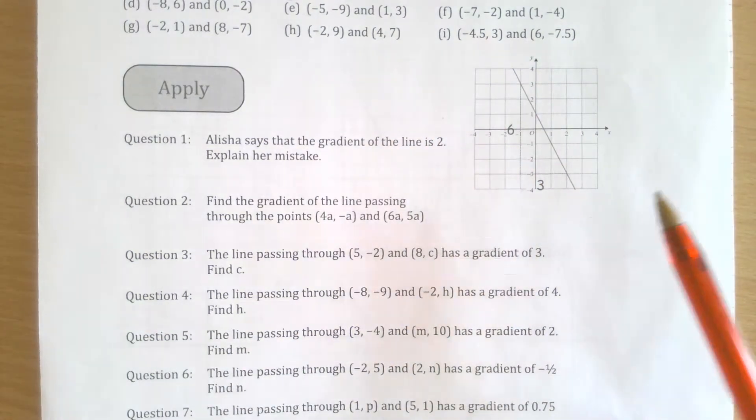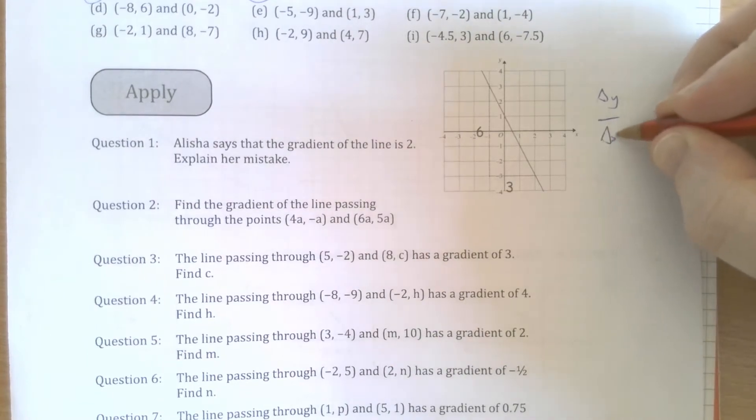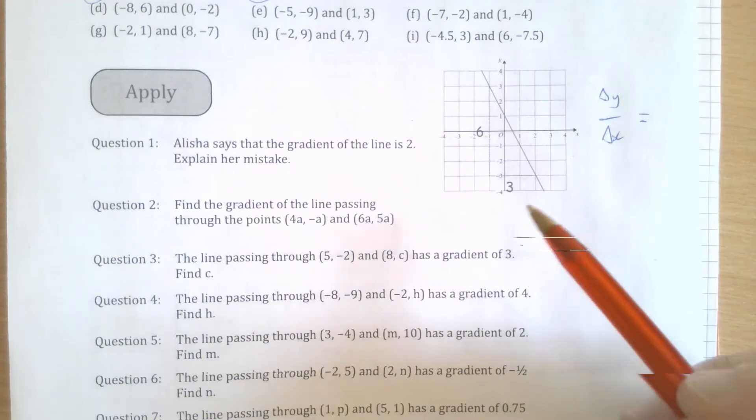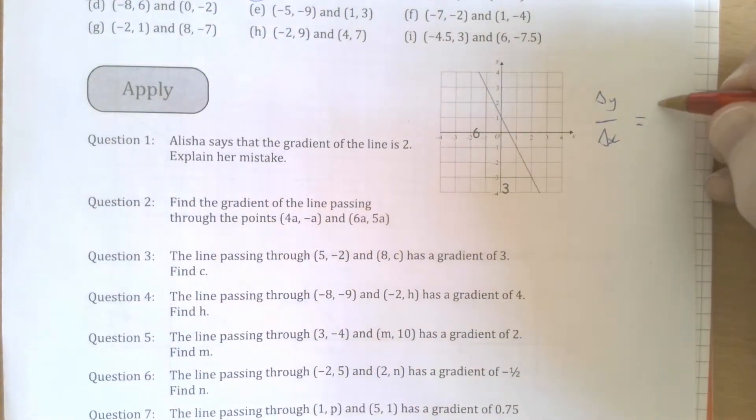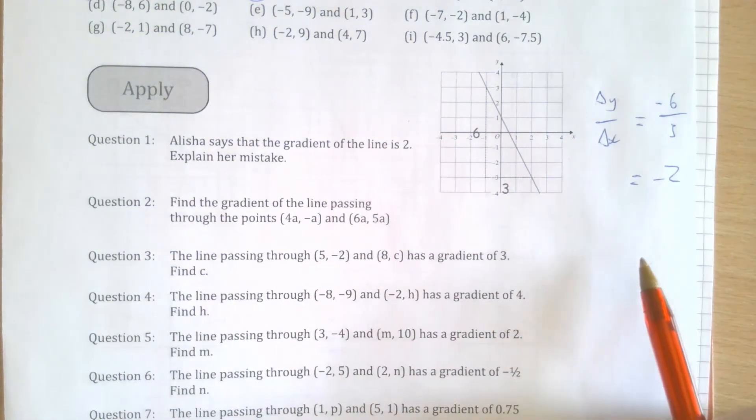It's sloping downwards. That means that the change in y, remember I've talked about the change in y over the change in x before, it isn't positive 6, it is negative 6. Vertically, it's going down by 6 when it's going across by 3, which makes the gradient negative 2. That is her mistake.